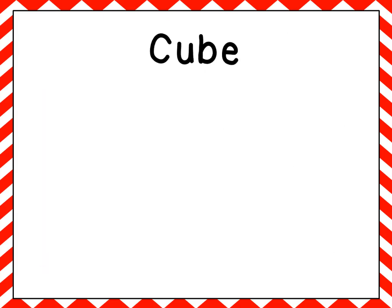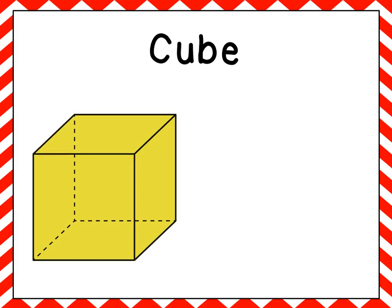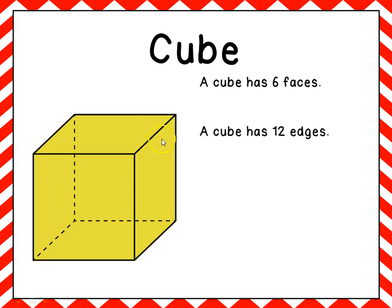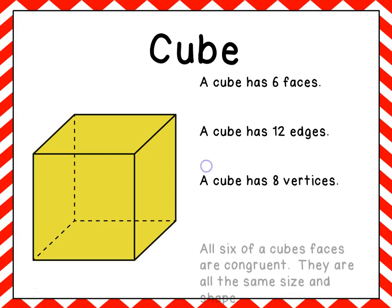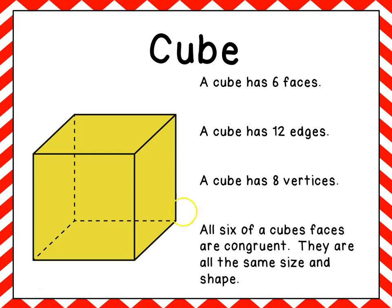The next solid figure is a cube. A cube is very similar to a rectangular prism. A cube also has six faces, twelve edges, and eight vertices. The major difference between a cube and a rectangular prism is that all six of a cube's faces are congruent, meaning they're all the same size and same shape.